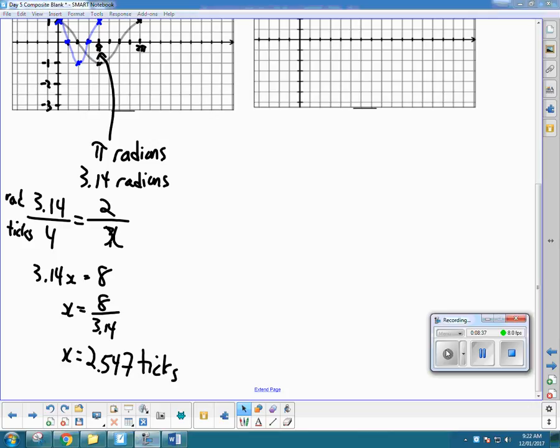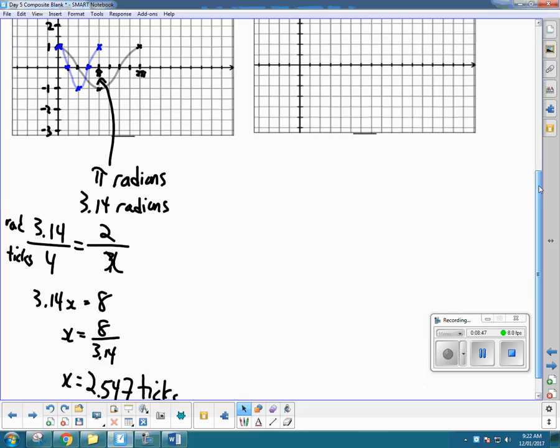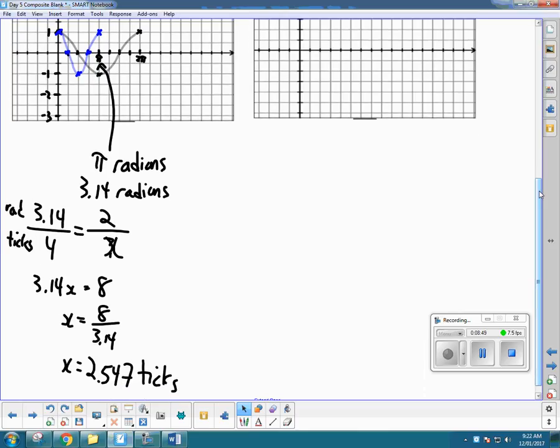2.547 ticks. So what we figured out then is a movement of left two radians ends up being about 2.5 ticks on our scale. So if we go back to our graph here, we're going to take that blue graph and move it left 2.5-ish ticks. So there's one, two and a half ticks. So it's going to start about there. This one, one, two and a half, end about there. One, two and a half, be about there. The zero will be one, two and a half. One, two and a half. And you end up with this as our final answer.